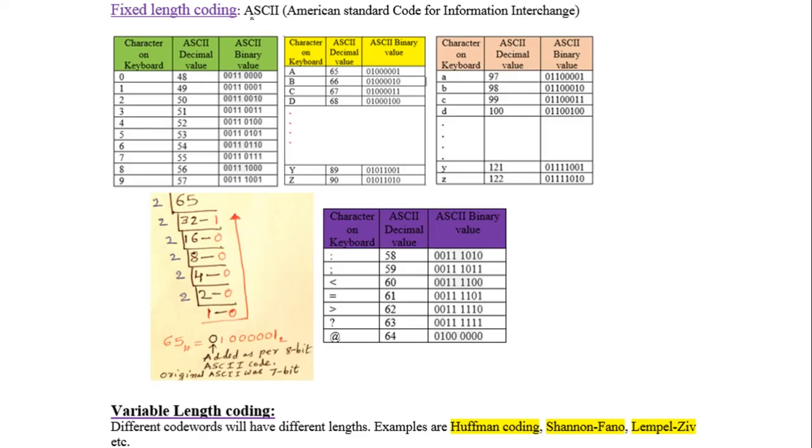Another fixed length coding example is ASCII. The numbers on the keyboard are represented with different ASCII values. Digits 0 to 9 start with decimal value 48. Uppercase letters start from 65, and lowercase letters are represented from 97 to 122. Different special characters on the keyboard have different ASCII values.